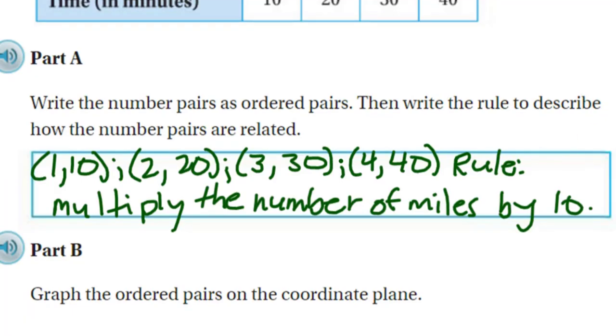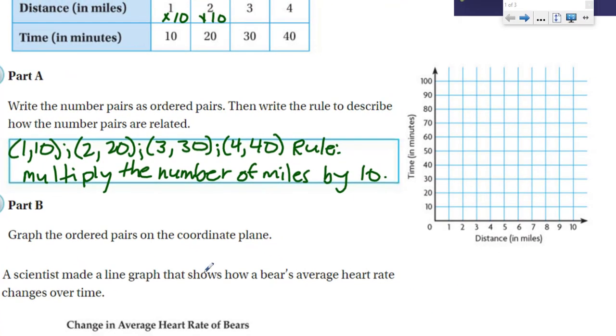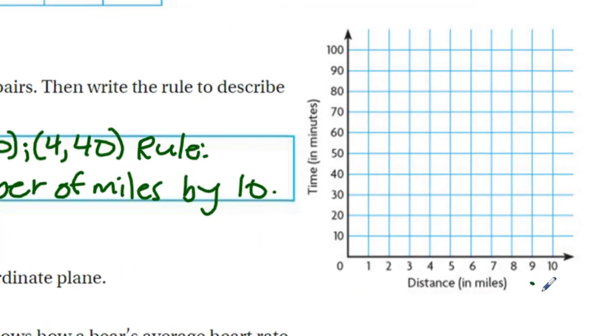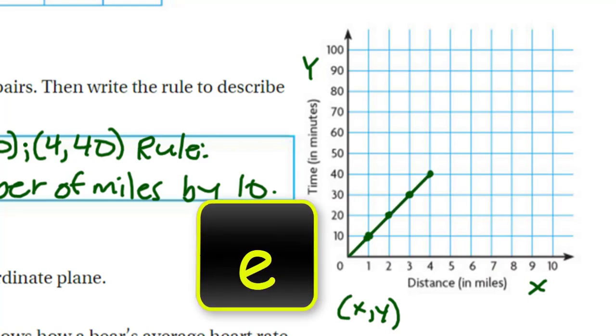Now, what does part B want us to do? Part B says graph the ordered pairs on the coordinate plane. We have our X and our Y axis. And these are ordered pairs. So we have to remember X always starts our plotting on that grid. So here the first one was one ten. So you can see we got this little intersecting lines here. The one and the ten. Then we have two and the twenty. And finally the four and the forty. Now we just need to draw a line.